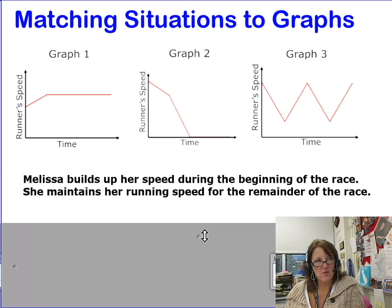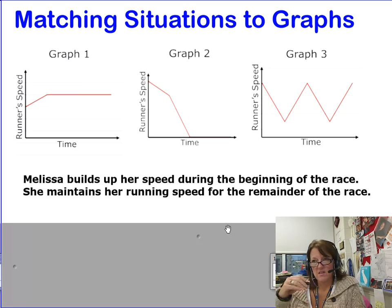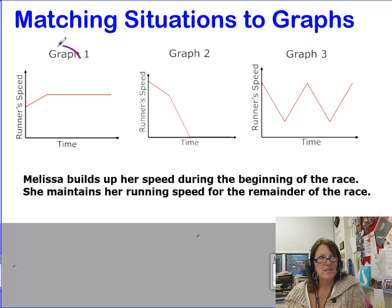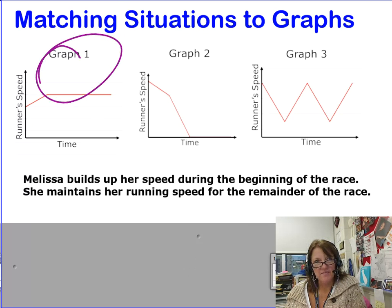Let's look at it again. This time, same three graphs, this time we have Melissa. Melissa builds up her speed during the beginning of the race, then she maintains that speed for the whole rest of the race. So she starts off at a decent amount and then she increases until she gets through the whole end of the race. Which situation is it? Is it graph number one, graph number two, or graph number three? Pause the video, make your guess. Ding! We're back. And this one, graph number one, should be the one you pick.